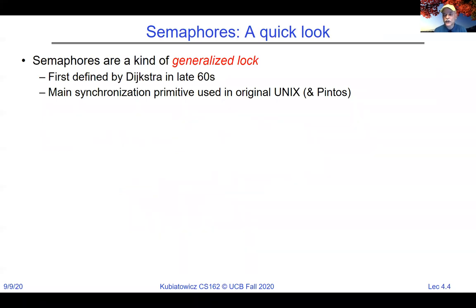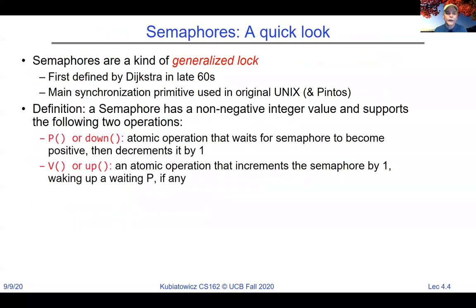There are some other tools we might use instead of just locks. There's a really rich set of synchronization primitives we'll start talking about. One of them that you might encounter fairly quickly is semaphores. A semaphore is basically a generalized lock, first defined by Dijkstra in the 60s. It's been around since then and everybody uses it inside various operating systems. It's really like a generalized number — a semaphore has a non-negative value associated with it, and two operations: P and V.